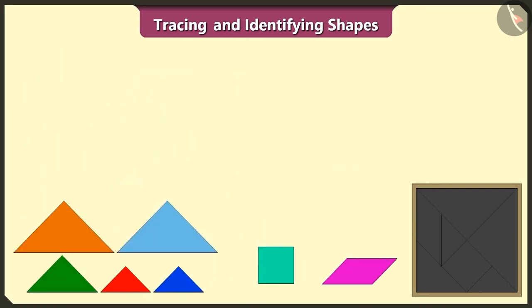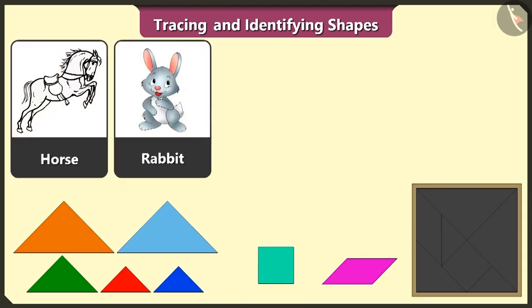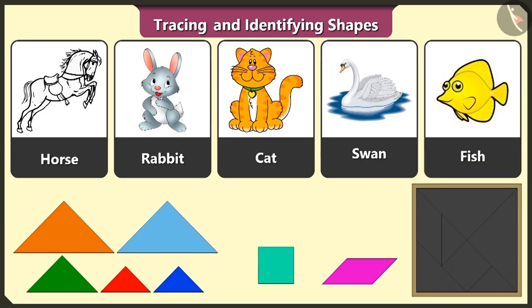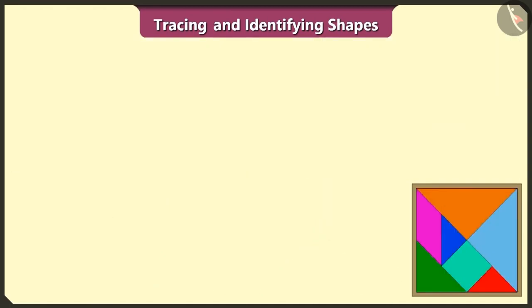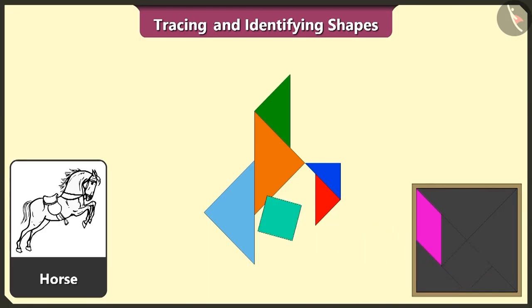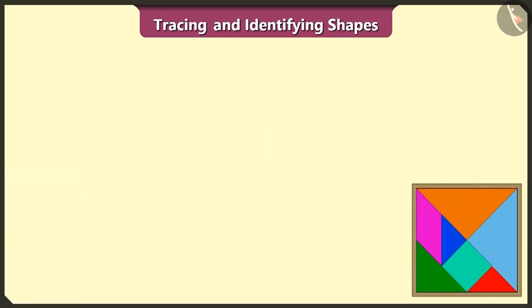Today we will create figures of a horse, rabbit, cat, swan, and fish using these shapes. Look, this is a horse. Now we will make a horse using five triangles, one square, and one quadrilateral. See, the horse is ready!